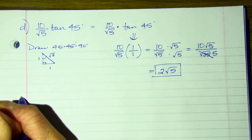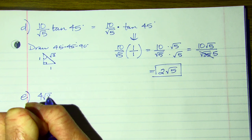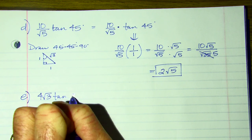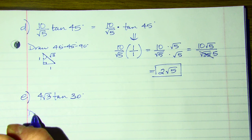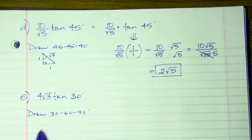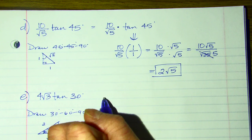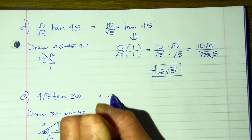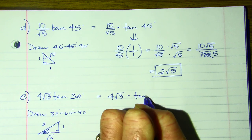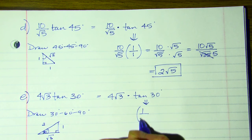Next one, evaluate 4 root 3 times the tangent of 30 degrees. So I'm going to draw, since it referenced 30, my 30-60-90 triangle. So here is, right, that right there is your 30 because it's the smaller. This is 90. I have 1, 2, root 3. So this equals 4 root 3 times the tangent of 30. The tangent of 30 would be 1 over root 3.